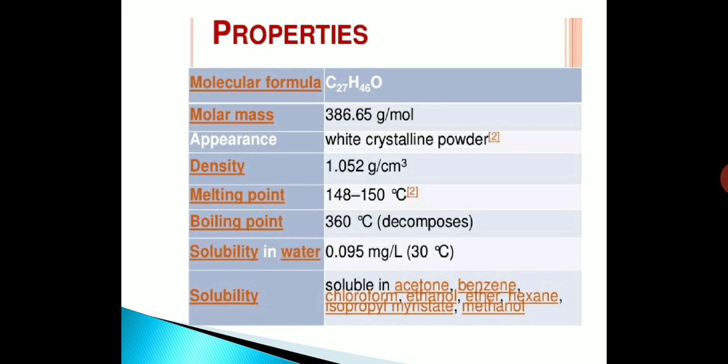Properties: Its molecular formula is C27H46O. Molar mass is 386.65 gram per mole. Its appearance is white crystalline powder. Density is 1.052 gram per cc. Melting point is 148 to 150 degree Celsius.